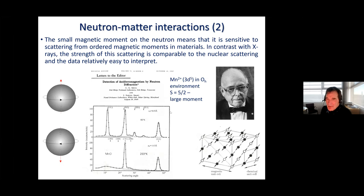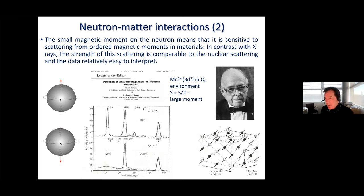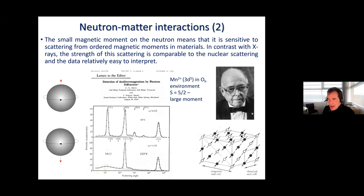The vast majority of materials containing magnetic atoms have those atoms acting in isolation of one another. But there are materials where the magnetic atoms have forces between them that prefer a particular alignment of the magnetic moment on one atom compared to its neighbors. One such example is manganese oxide — the example chosen by Cliff Shull to demonstrate that neutrons could reveal magnetic structure.